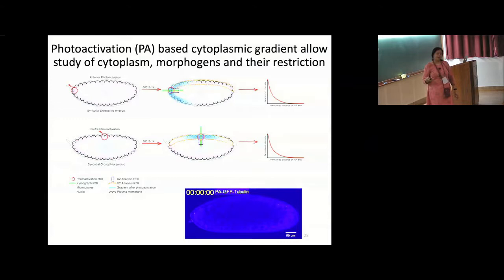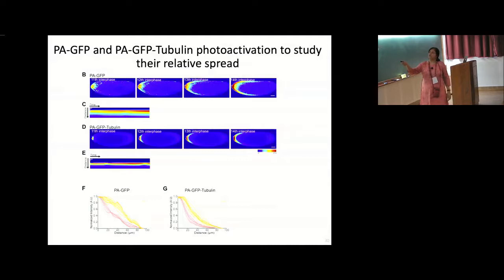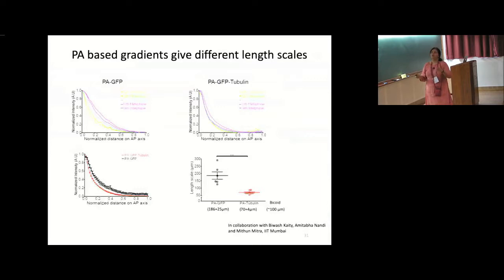There is a greater spread on the cortex of the embryo as compared to the depth of the embryo. There is a greater distance traveled in the cortical direction as compared to inward. This is also the region in which the cells are present and where there is more crowding. This again alludes to the fact that there is some sort of separation in the center as compared to the periphery. Since we can look at the spread of these gradients across time, we can quantify the steady state and estimate final length scales.